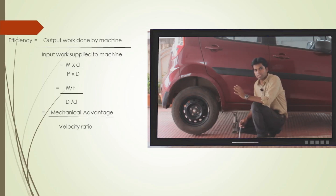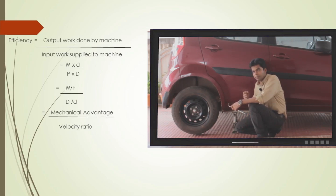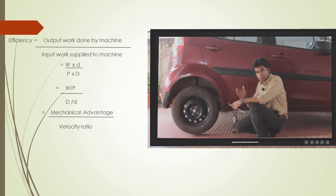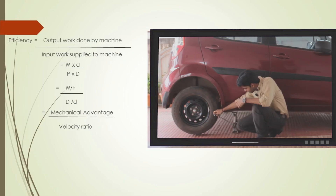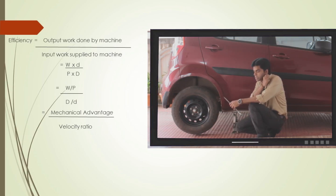Efficiency is defined as the ratio of output work done to input work done. Suppose the car has weight W and is lifted by a distance d, so the output work done is W × d. The input work is the force P applied on the lever multiplied by the displacement D of the lever, where D = 2πl and d = pitch. So input work done is P × D.